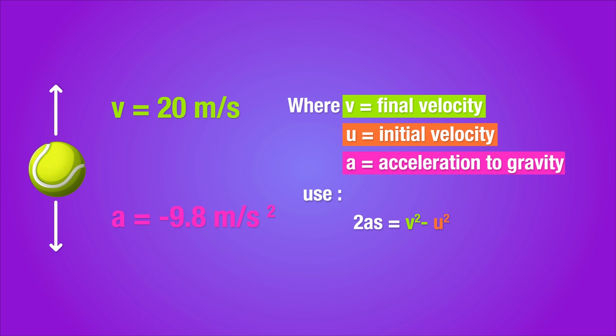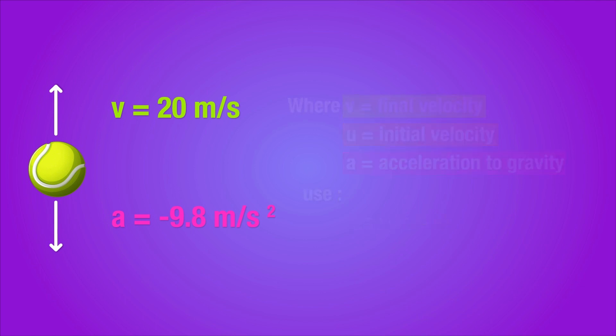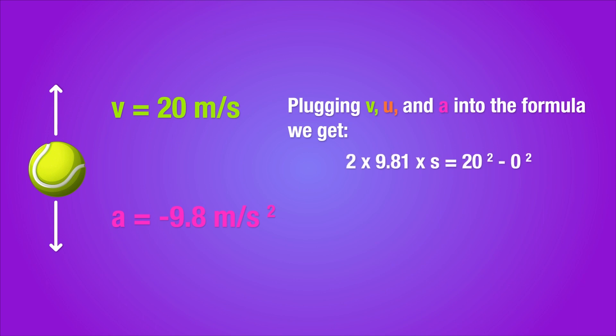We want to use this formula because we don't know the time it'll take for the ball to reach its maximum height. When we plug in these values, we get 2 into 9.81 into s equals 20 square minus zero square. When we solve for displacement, we get 20.39 meters. This means the ball will reach a maximum height of a little over 20 meters.